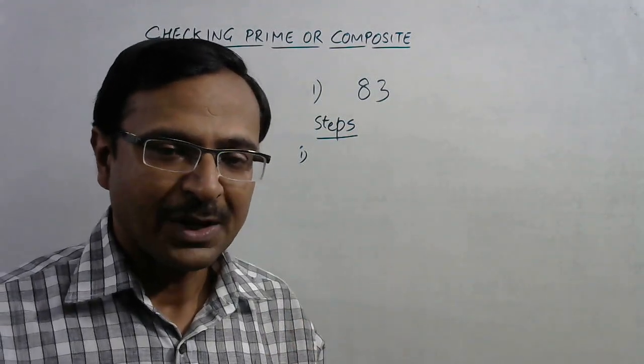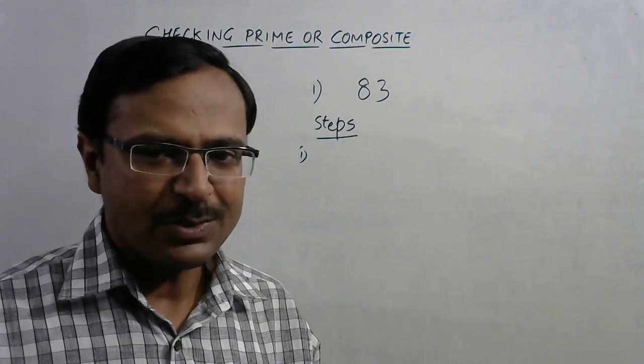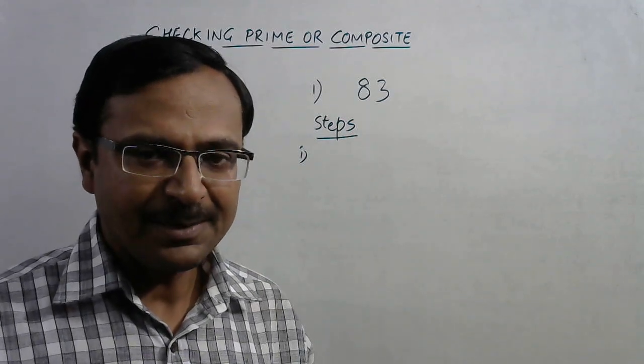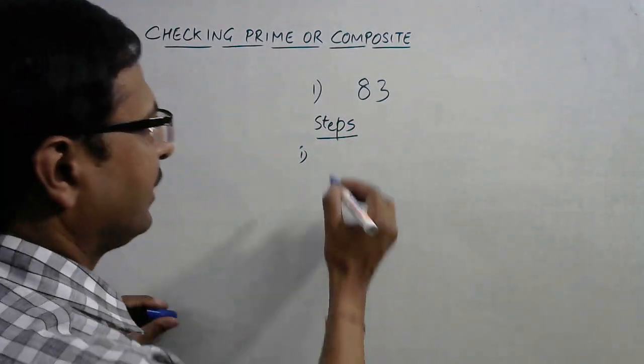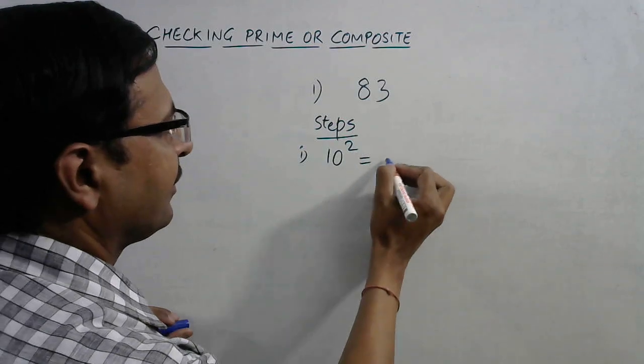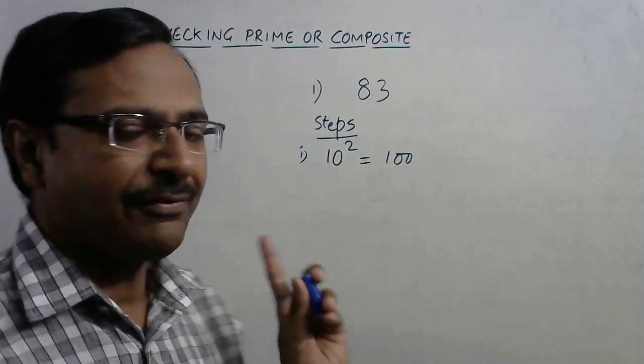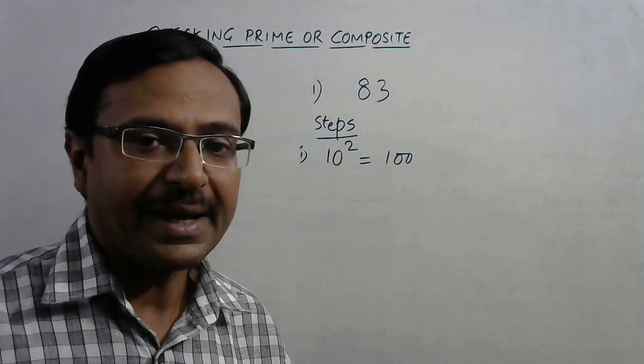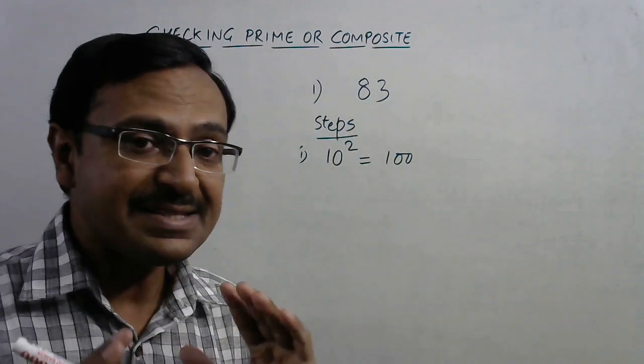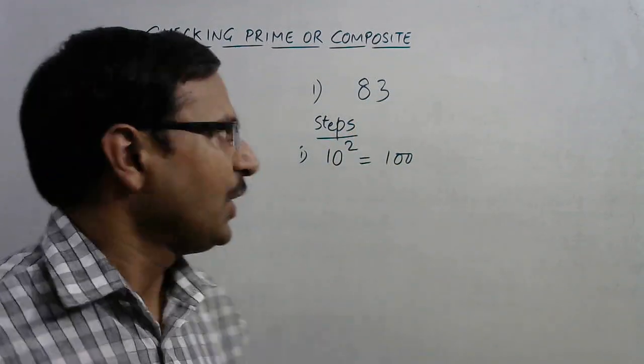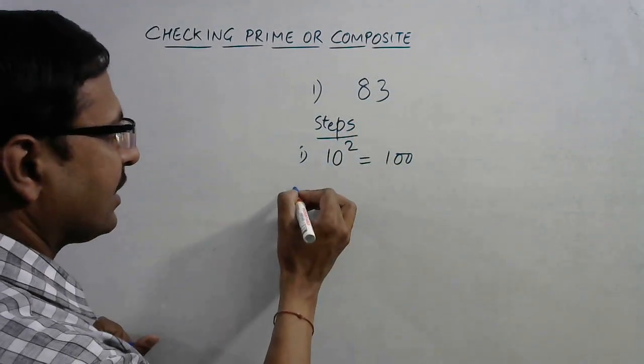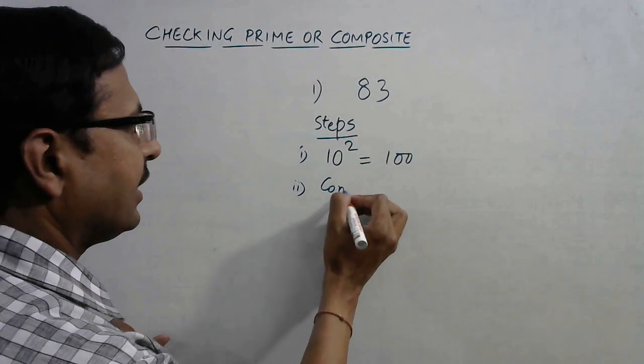So 9 into 9 is 81; it is less than 83, so you need to take 10 into 10 equals 100. So I have found out a number whose square exceeds 83, just exceeds 83. Now just consider the number 10.